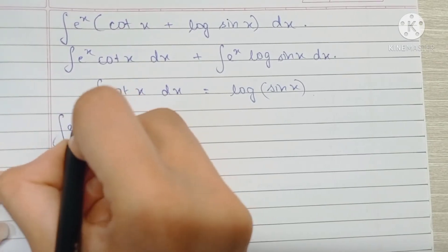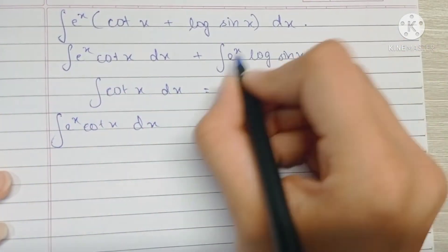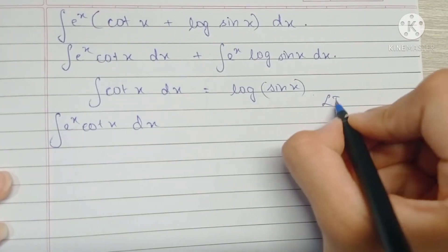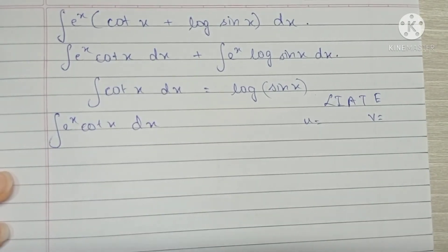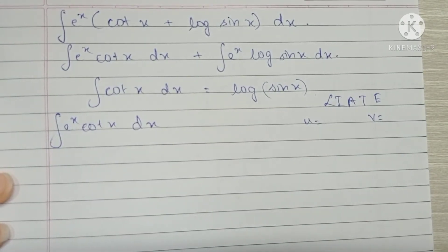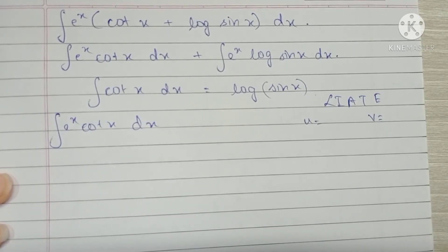We're going to keep e raised to x cot x as it is and solve this integral by parts using the LIATE rule. If you don't know how to use the LIATE rule and you're not sure about the by-parts formula, you can check out my video in which I explain it. I'll be linking it in the description box and at the end of the video.